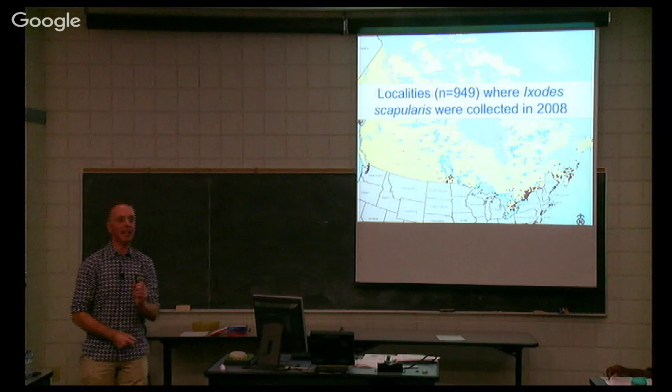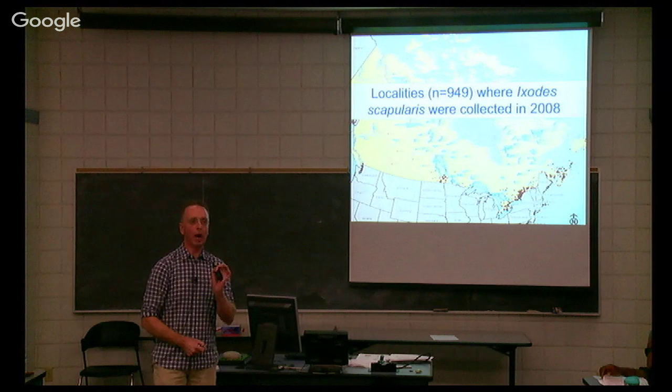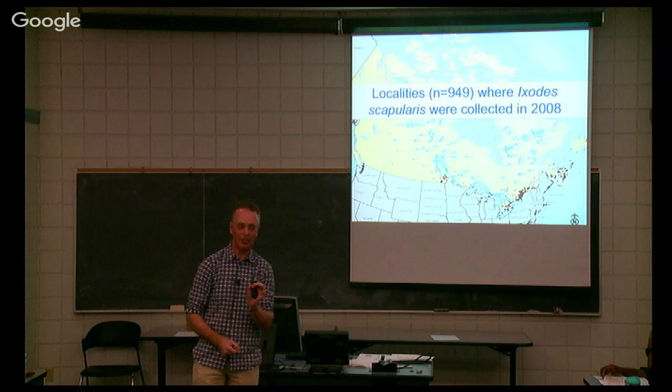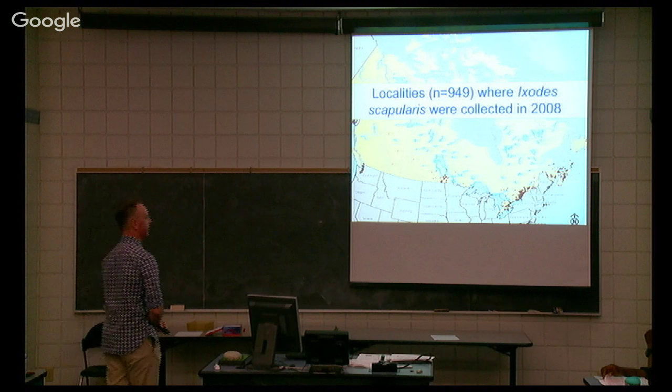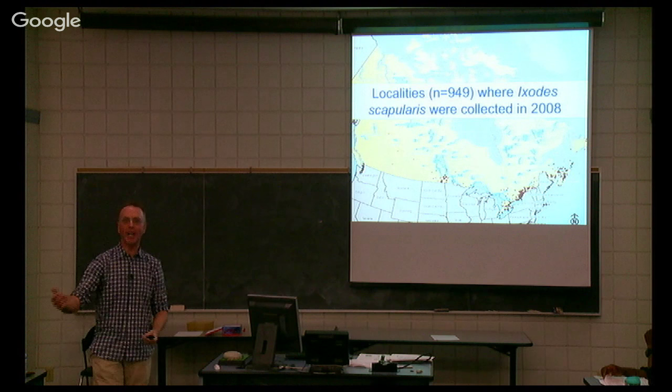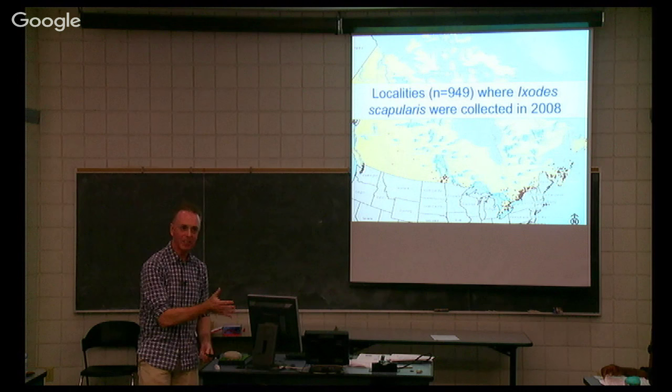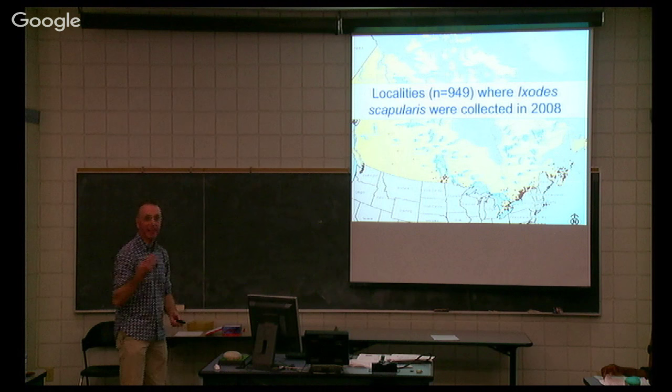What about Canada? Prior to 1995, the only place in Canada where this tick occurred — certainly back to the early 1970s — was Long Point, Lake Erie. Since the mid-1990s, the Public Health Agency of Canada has been operating a passive surveillance system. Whenever you pick one of these ticks off yourself or a pet, it's sent to the central lab in Winnipeg, where they screen the ticks for Borrelia burgdorferi. This shows all the ticks they received in 2008, mostly from the Maritimes, New Brunswick, Nova Scotia, southern Quebec, throughout southern Ontario, and southern Manitoba.